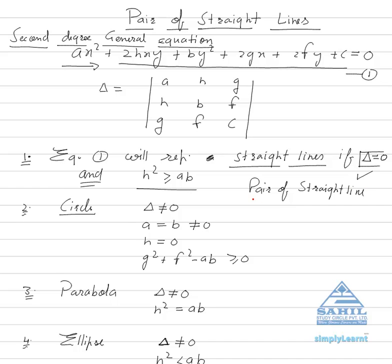For a circle, four conditions must be satisfied: first, delta must not equal zero; second, a must equal b, meaning the coefficient of x² must equal the coefficient of y², and neither should be zero; third, h must equal zero (h is half the coefficient of xy); and fourth, g² + f² - ab must be greater than or equal to zero for it to be a real circle.